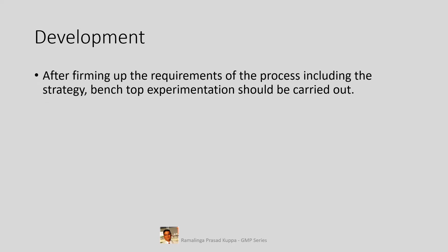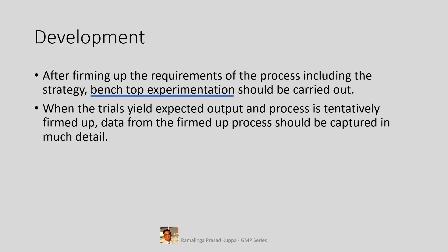Let us understand the important aspects of development. After firming up the requirements of the process including the strategy, benchtop experimentation should be carried out. In the development stage, bench-top scale experiments should be carried out to check whether or not the chemistry works as expected. All experiments may not give correct output with correct specifications. After a few trials, the process chemistry will be established. Documentation of data for unsuccessful trials may not be of much use. When the trials yield expected output and the process is tentatively firmed up, data from the firmed-up process should be captured in much detail.